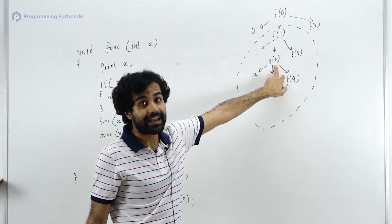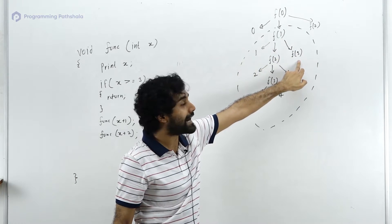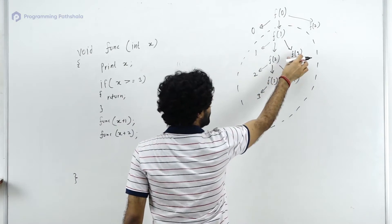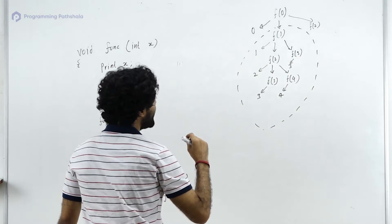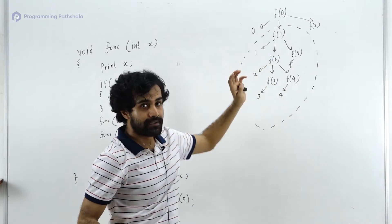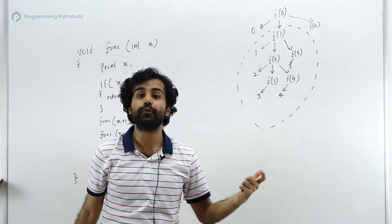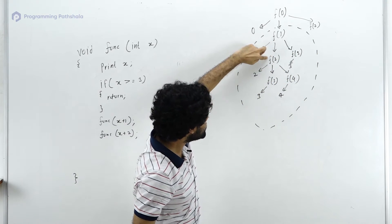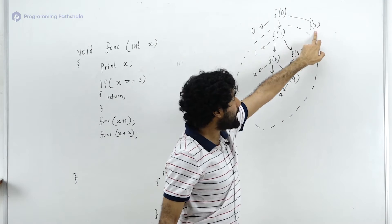f(2) has finished all its statements, so it exits and control goes back to f(1). f(1) now makes its second call — func(x+2) which is f(3). This f(3) prints 3, the condition is true, and it returns. f(1) has now completed all its statements, so it also exits and control returns to f(0).